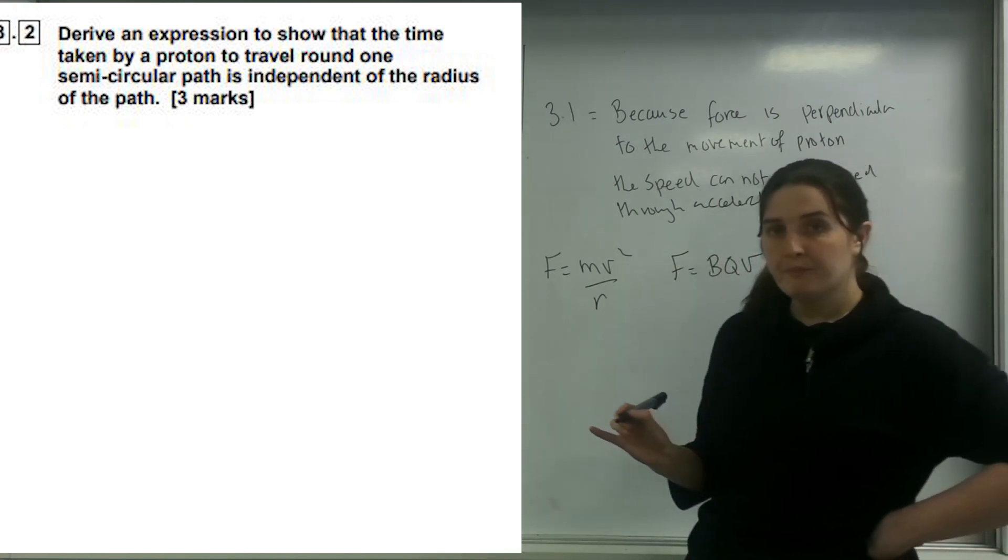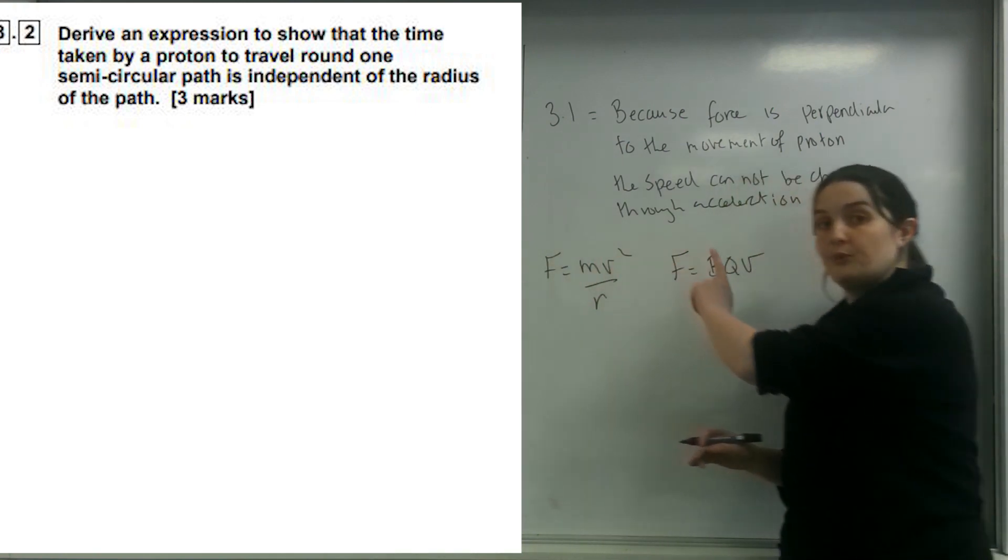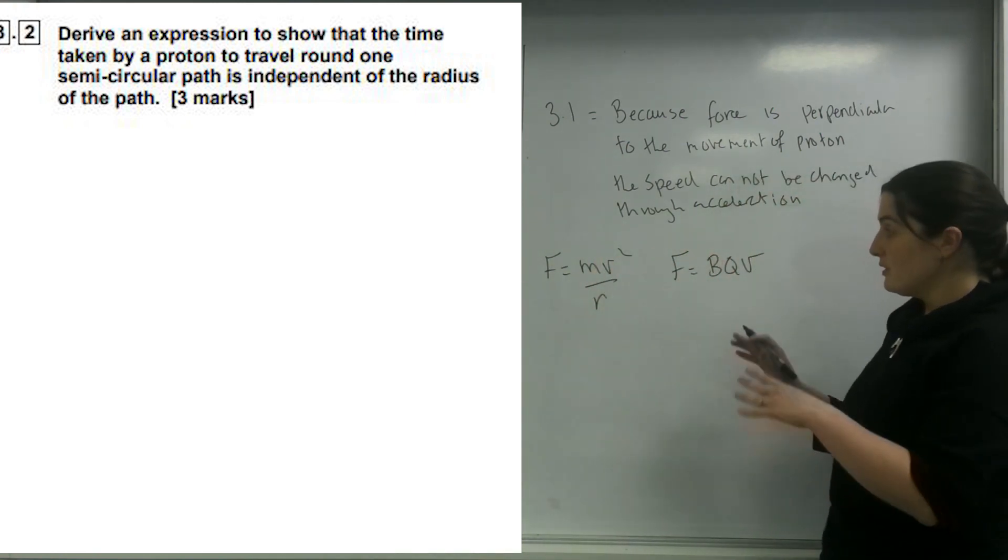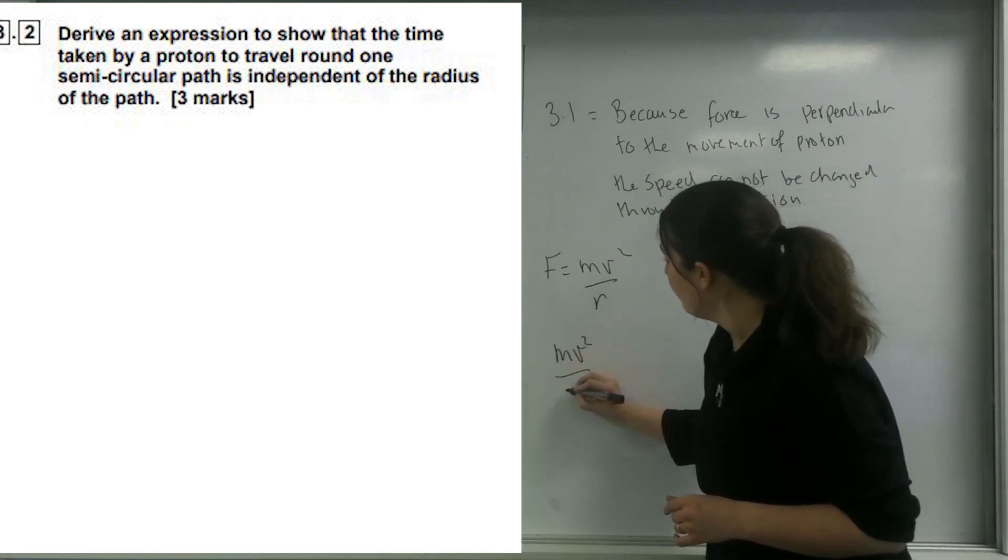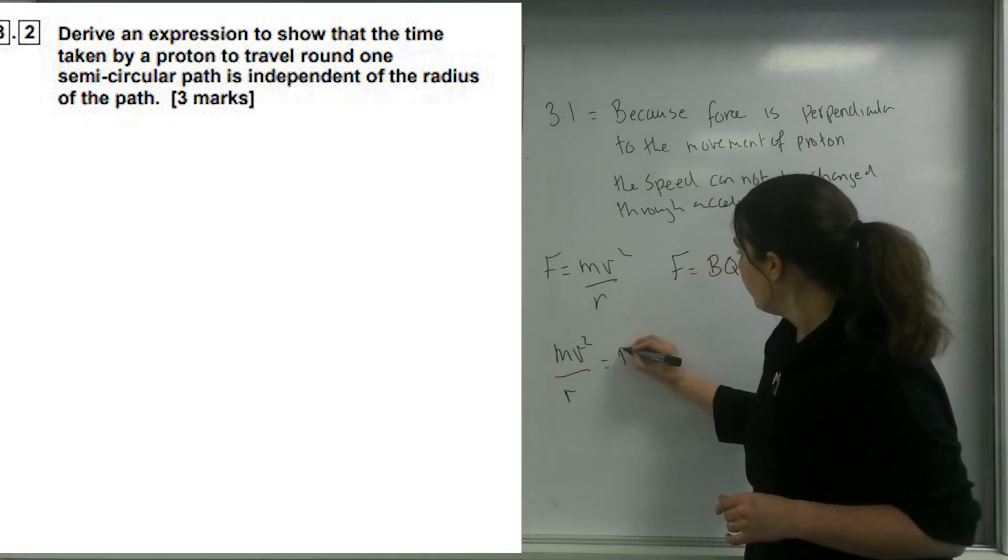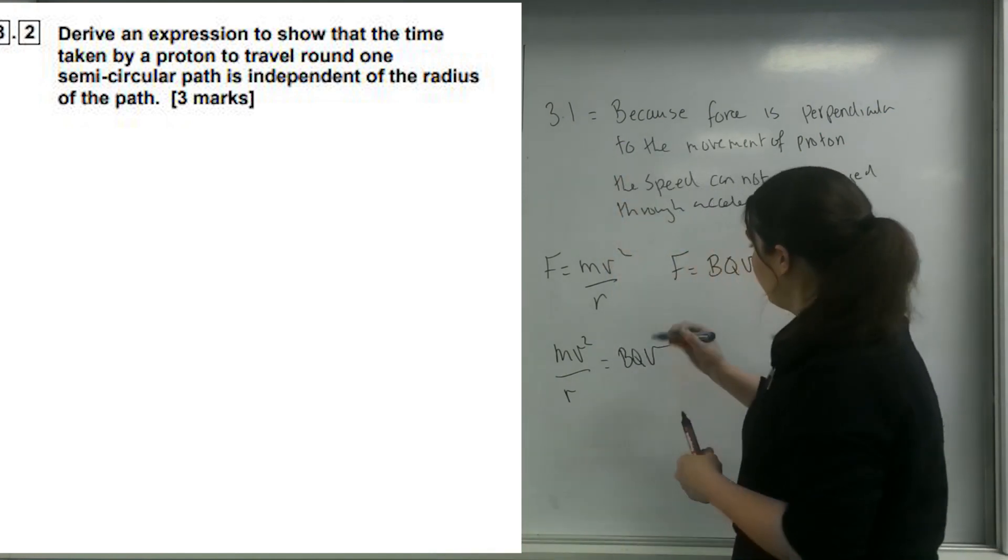The thing that's moving it in a circle is the magnetic field. The force causing the circular motion is the force causing it to move in a magnetic field. So these force equations are together. I've got mv squared over r equals bqv. The v's cancel.